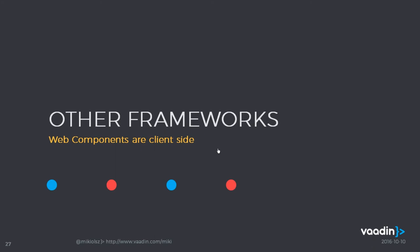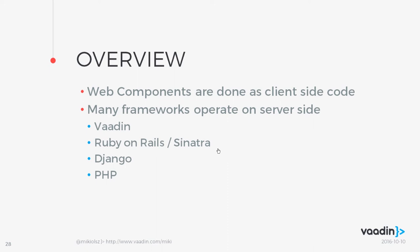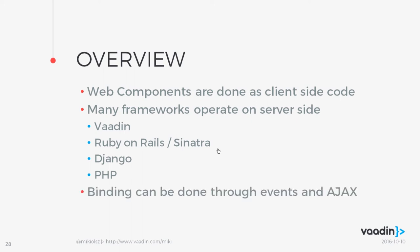Web components are done on the browser — it's client-side stuff: HTML imports and JavaScript handled by the browser. Many frameworks operate server-side: Vaadin, Ruby on Rails, Django, PHP. To use Vaadin elements or any web components with server-side frameworks, you can bind the events those components broadcast with Ajax requests. The drawback is that for each framework you have to do it yourself unless there's a ready-made package.